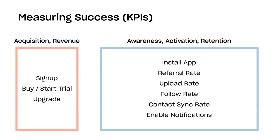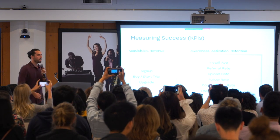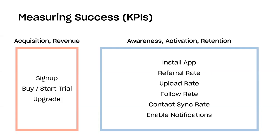Here are some categories of KPIs that allow you to measure success. On the left are acquisition and revenue — signing up for a product, buying a product or service, starting a trial, or upgrading to a premium version. On the right are awareness, activation, and retention — in-app metrics like install app, referring someone, uploading content, follow rate on social networks, contact sync rate to build your social graph, and enabling notifications for re-engagement. There's a framework by Dave McClure of 500 Startups called the pirate metrics — AARRR — covering these categories.